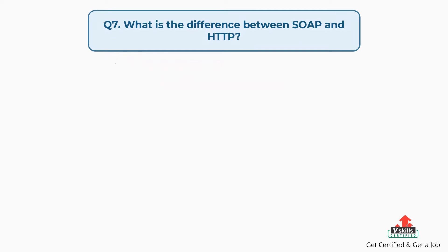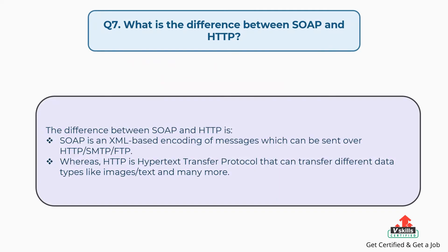Question number seven: What is the difference between SOAP and HTTP? SOAP is an XML-based encoding of messages which can be sent over HTTP, SMTP and FTP. Whereas HTTP is Hypertext Transfer Protocol that can transfer different data types like images, text and many more.